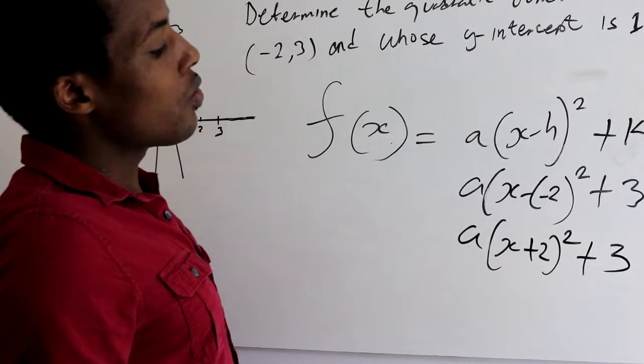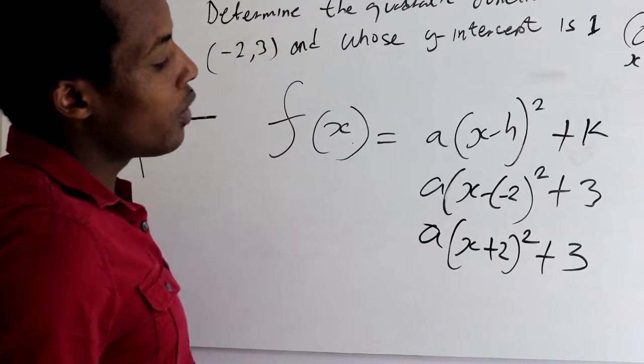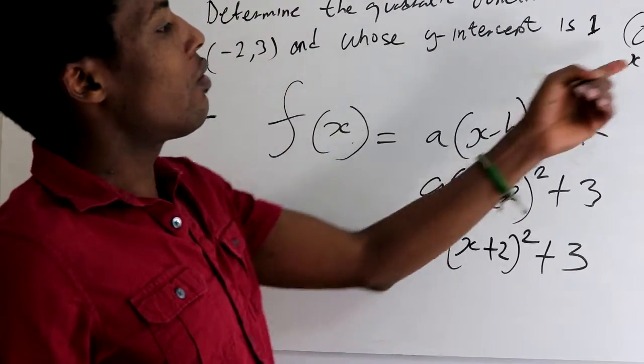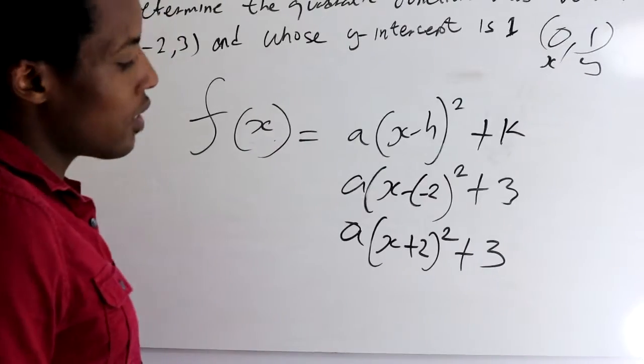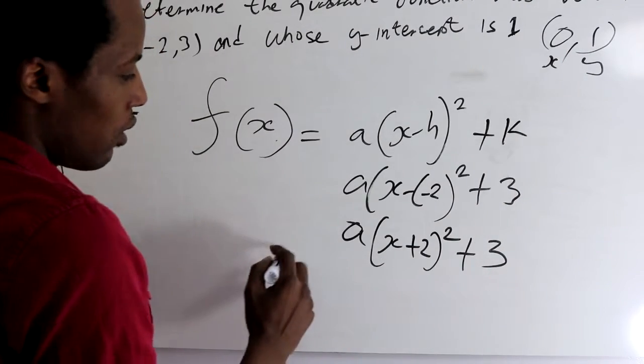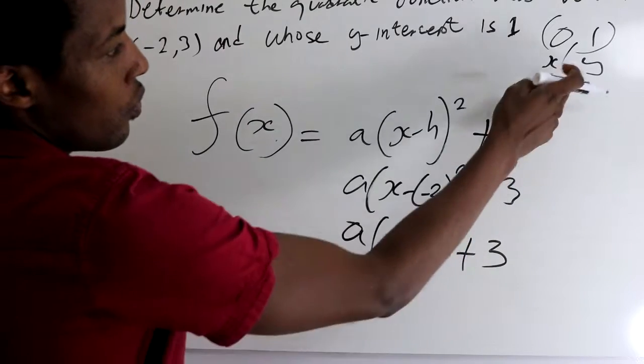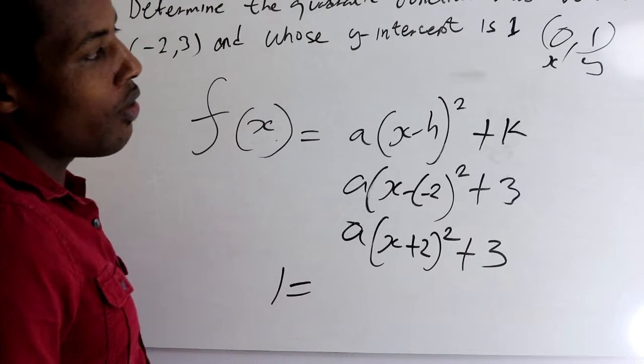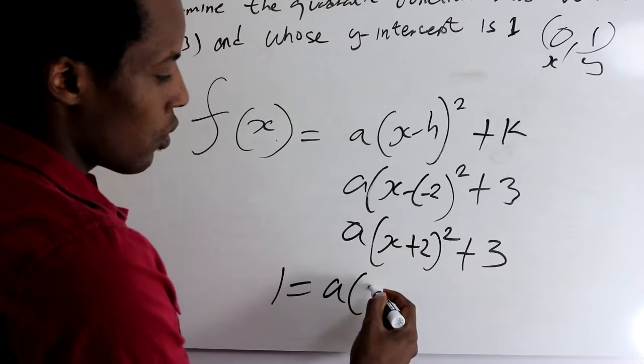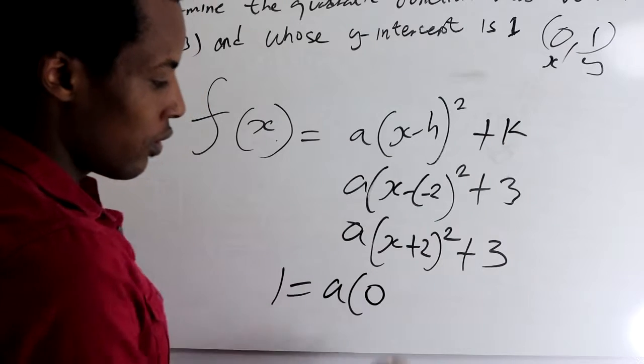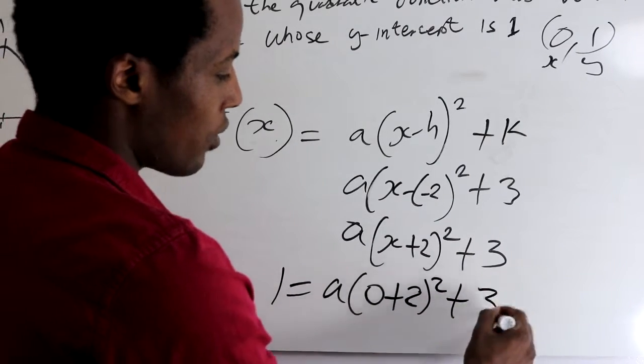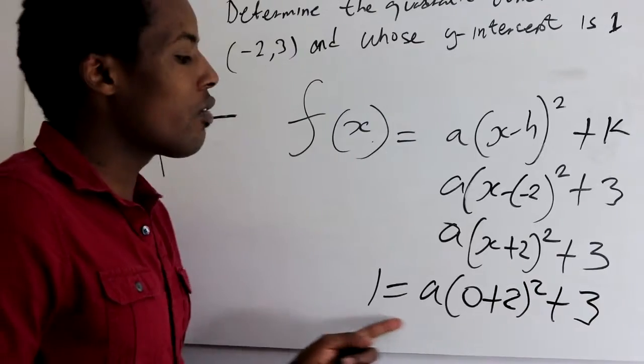So in order for us to get the value of A, we have to replace the whole equation with the values of Y-intercept. So our y value, our Y-intercept is going to be 1. 1 is equal to and our x value 0. A equals 0, that's the x value, plus 2 squared plus 3 in order for us to get the value of A.